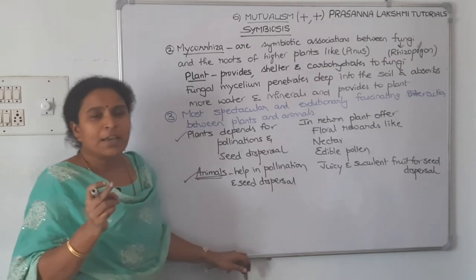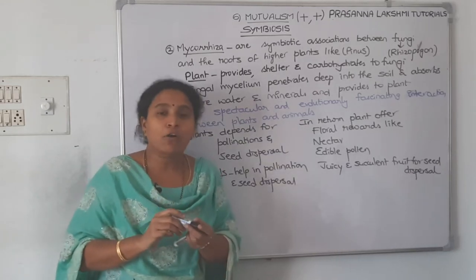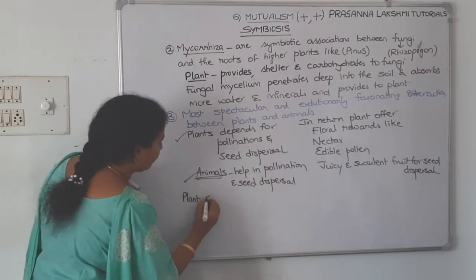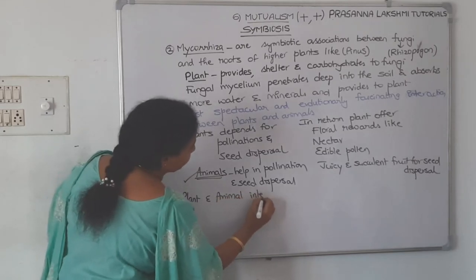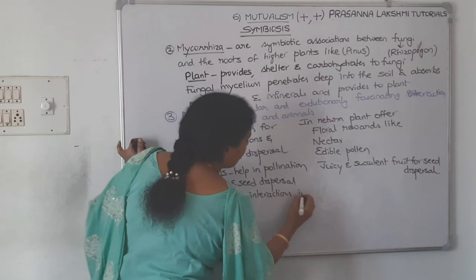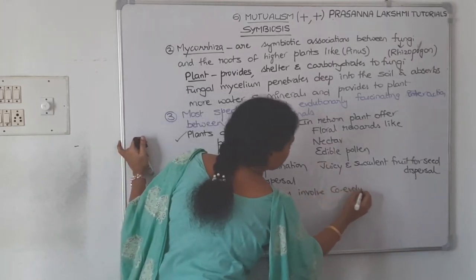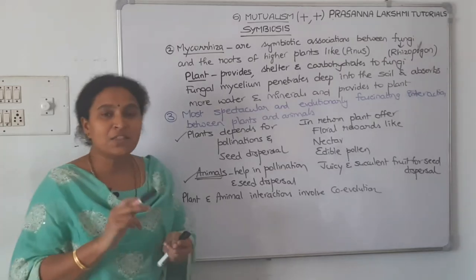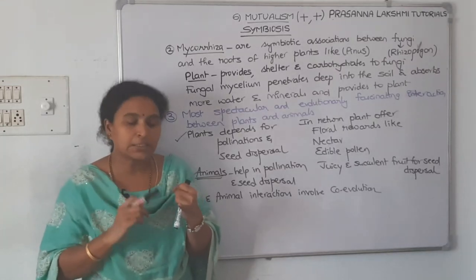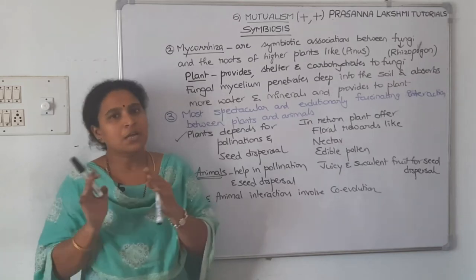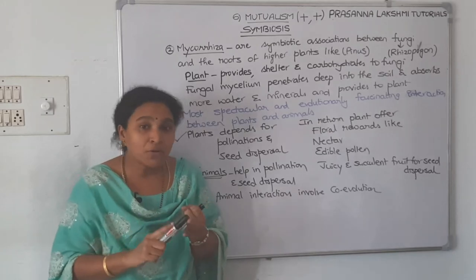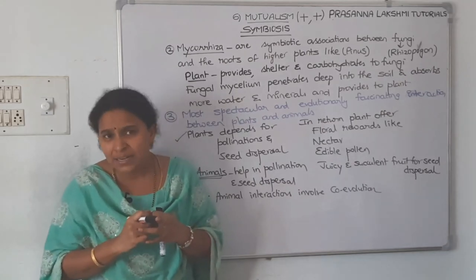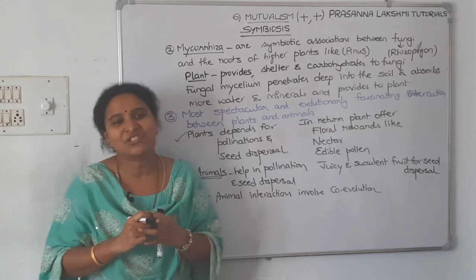Plant and animal interactions involve co-evolution — if the plant is evolving, then parallely the animal also evolves. So far we have seen three examples of mutualism: first, lichens (symbiotic associations of algae with fungi); second, mycorrhizal associations (fungi with roots of higher plants like Pinus); and third, the spectacular plant-animal pollination and seed dispersal interactions.